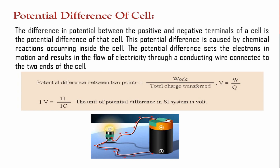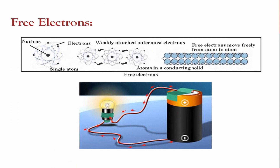Now let's look at free electrons. An atom consists of a nucleus and electrons. The electrons at the outermost shell are weakly attached to the nucleus and do not have strong attraction toward it. If you provide a small amount of energy to an outermost electron, it will jump off from the influence of the nucleus and become free. When we orient these free electrons using potential difference, there is a flow of current.